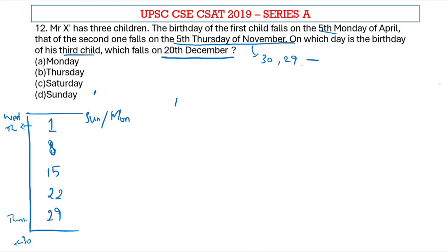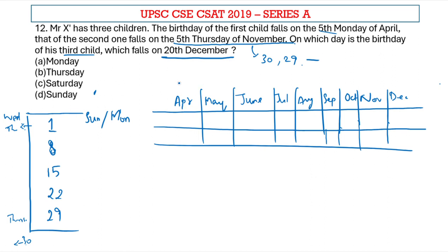We just have to find out which April possibility gives a 29th or 30th as Thursday in November. For that, I am writing down all the months here. April has 30 days, May has 31, June 30, July 31, August 31, September 30, October 31, November 30, and December 31 days.